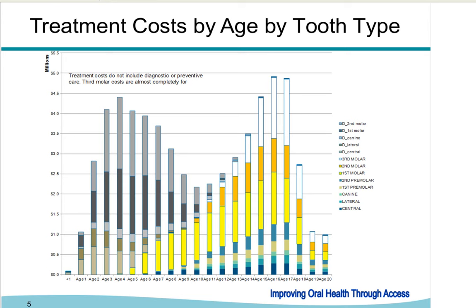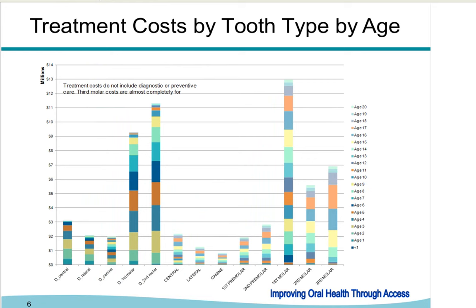The next slide shows the same information presented as treatment cost by tooth type by age. By far the tallest bar shows the permanent first molar and the ages at which that tooth is treated. Dental sealants on both permanent and primary teeth give us an opportunity to prevent disease throughout the entire life stage — most importantly for Medicaid and CHIP — saving those teeth, preventing the disease process, and protecting children covered in our programs.